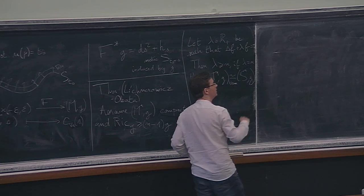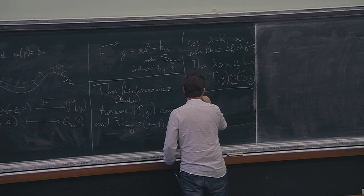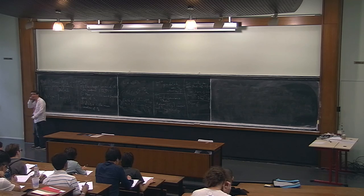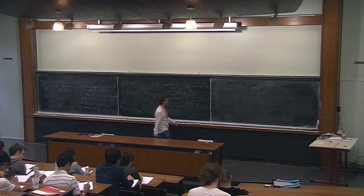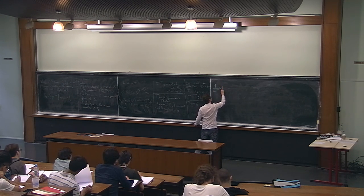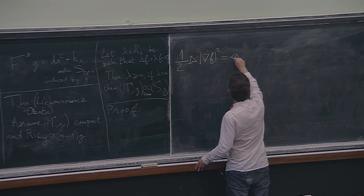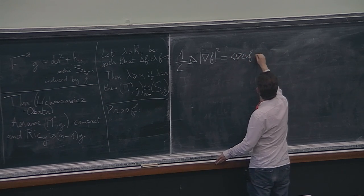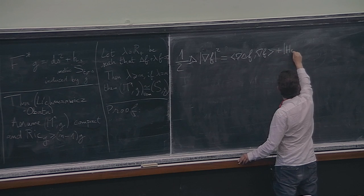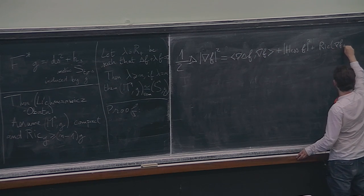Proof. The proof relies on the Bochner formula for the Laplacian and the gradient of a function. Recall that ½ Δ|∇f|² equals ⟨∇(Δf), ∇f⟩ + |Hess f|² + Ric(∇f, ∇f). We are on a compact manifold and will integrate this equality.